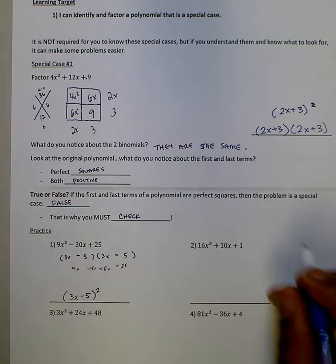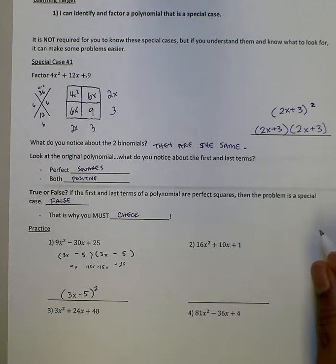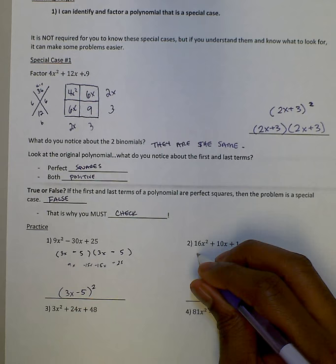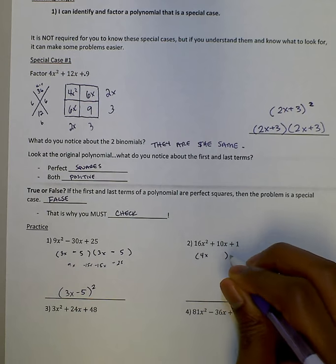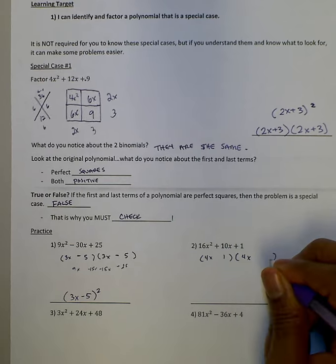Try this next one. We've got 16 and 1. So we see they're perfect squares. And we see that they're both positive. So we say, okay, square root of 16 is 4, 4x. Square root of 1 is 1. And so 4x,